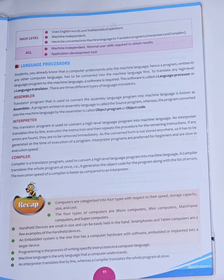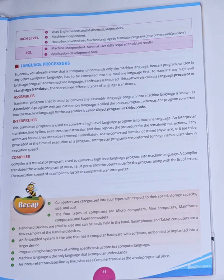When we were discussing micro computers, we came across handheld devices. Handheld devices are small devices which are smaller in size and can be held in hand. Examples of handheld devices are smartphones and tablet computers. After that we studied about embedded systems. An embedded system is one that has computer hardware with software which is embedded inside a larger device.